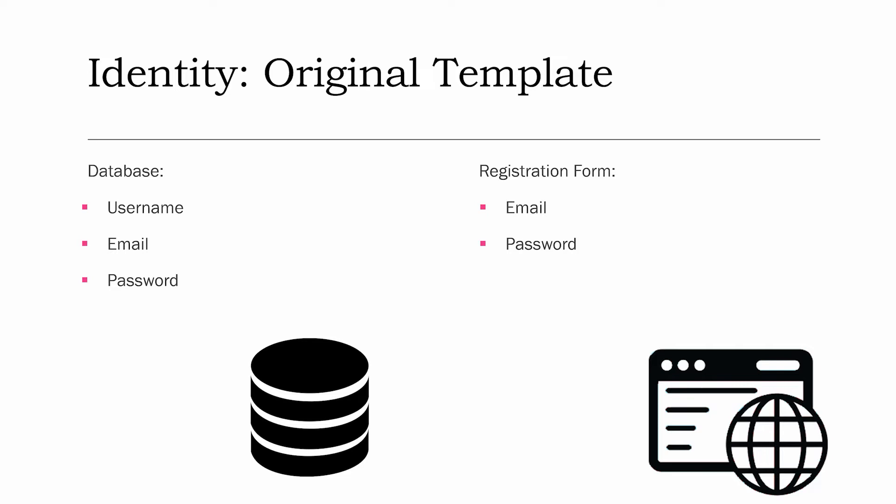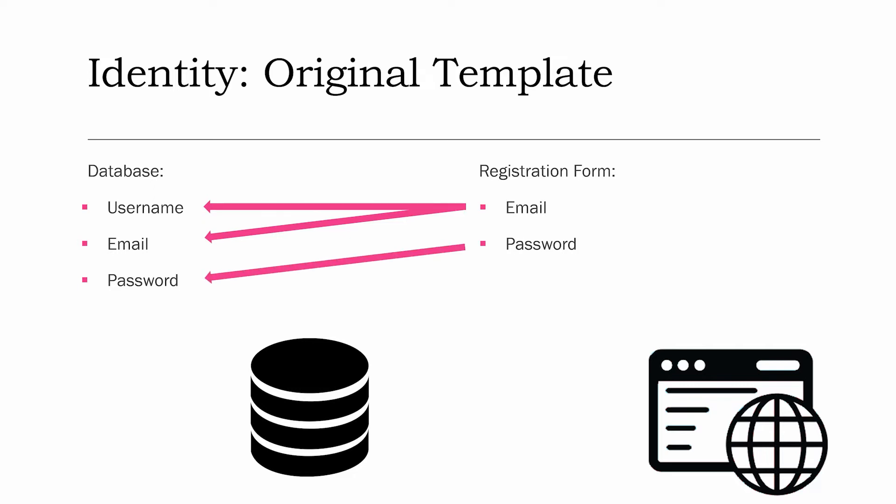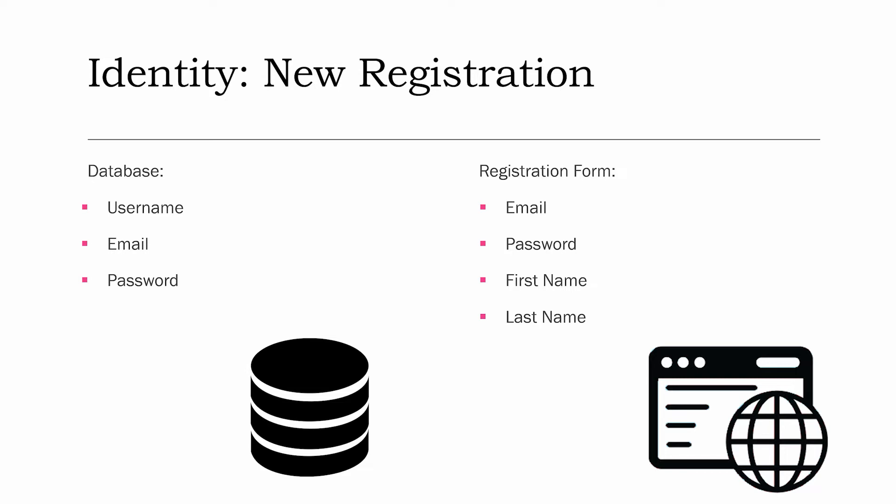So the way this works is when you hit the register button after filling in all the text boxes, the information from email gets transferred across to the database in its username and email fields. The password will get sent to the password field, albeit the password is actually encrypted so that the administrator for the database does not have access to the user's password information, which makes it really secure. But what we're hoping to do is add a couple more fields to our registration form — we're going to add a first name and a last name.